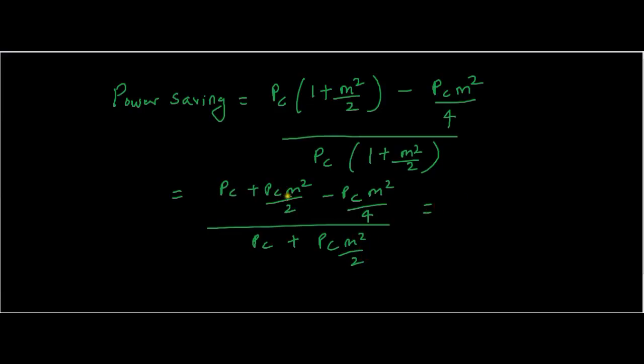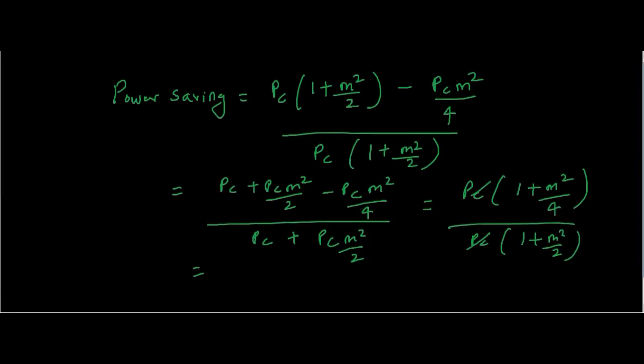This will be PC·m²/2 - PC·m²/4. So we can write it as PC(1 + m²/4) upon PC(1 + m²/2), so PC gets cancelled. The final equation is...